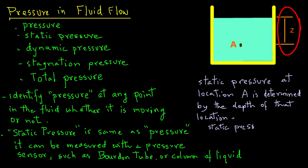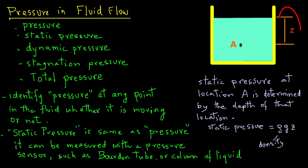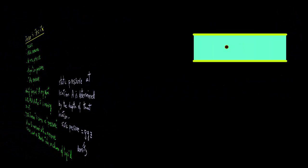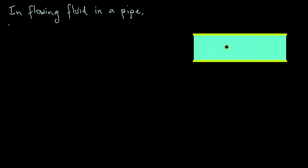We can write static pressure as ρ × g × z, where ρ is the density of the fluid (in this case water), g is the acceleration due to gravity, and z is the depth of that location from the top surface.